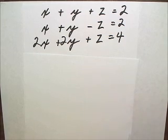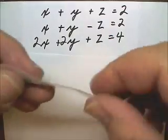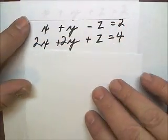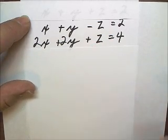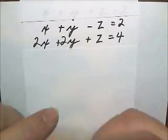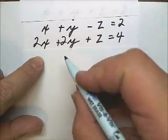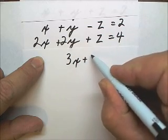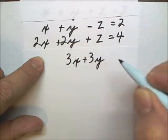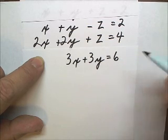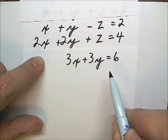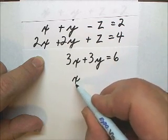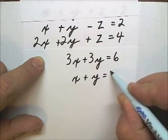Now, I need to work with the second two equations, and eliminate the z from the second two equations. So, here if I add these two equations together, the z disappears. I'm left with 3x plus 3y equals 6. And this equation is divisible by 3, so I wouldn't want to work with that one. I would work with x plus y equals 2.